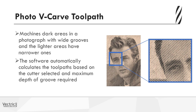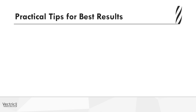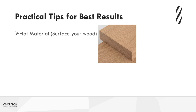A good photo v-carve is quite an art form, and the ideal settings change depending on your tool bit, the wood type and color, the photo itself, and the accuracy of your CNC machine. The material that you carve must be flat, otherwise the grooves will not be machined at the correct depth relative to the surface.